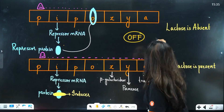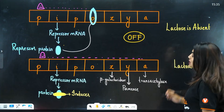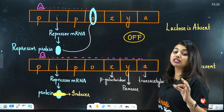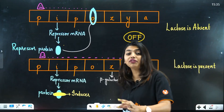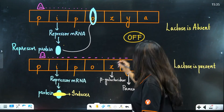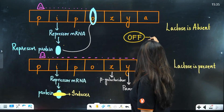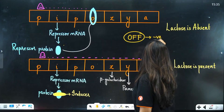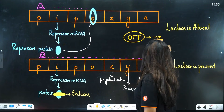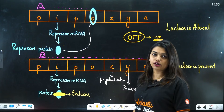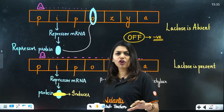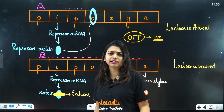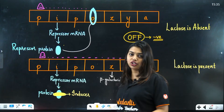RNA polymerase is blocked and the gene gets switched off. So when lactose is absent, the gene is switched off, leading to negative regulation. If something is off, we call it negative regulation.